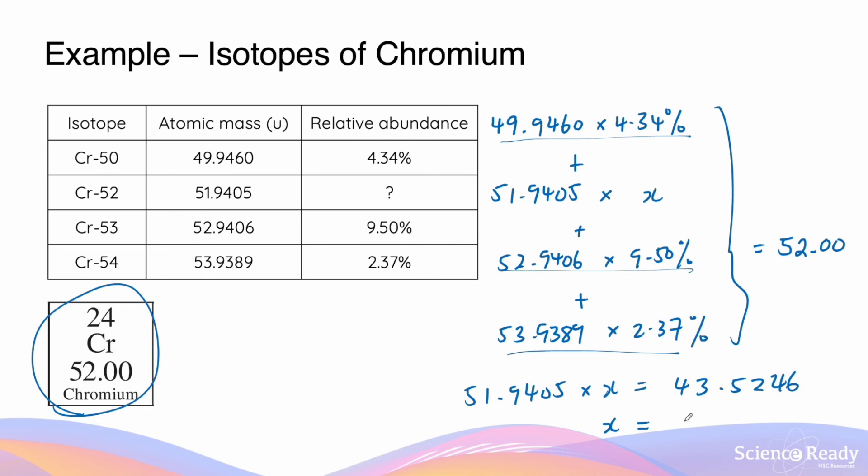We'll divide both sides by 51.9405 to find the value of x. And x here will be 83.8%, so the relative abundance of the chromium-52 isotope is 83.8%.